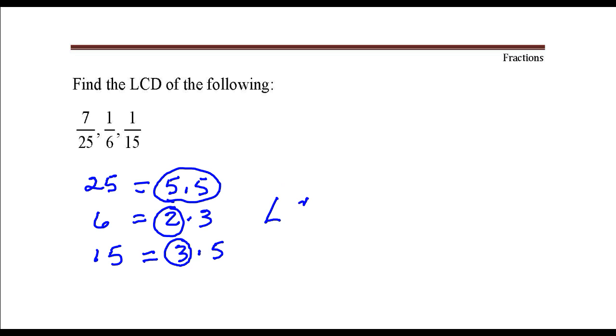Okay, then the least common denominator is the product of those numbers that I have circled. 2 times 3 times 5 times 5.